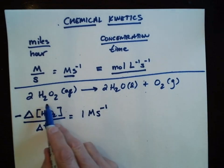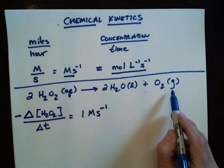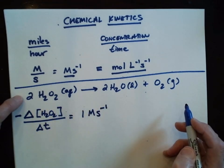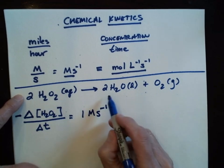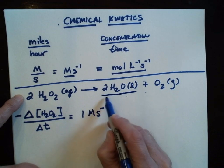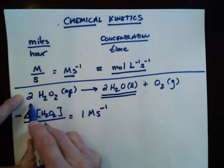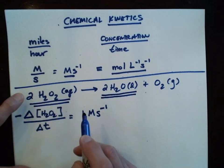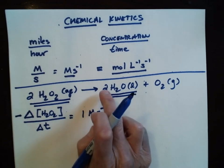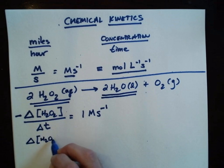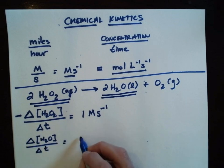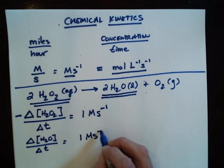From the chemical stoichiometry, the rate of disappearance of hydrogen peroxide should equal the rate of appearance of water, because for every two of these that are lost, two of these are gained. So the change in the concentration of water with time is going to be a positive 1 molar per second.